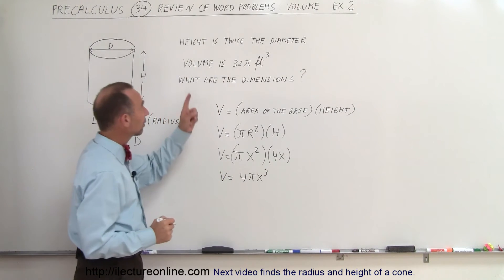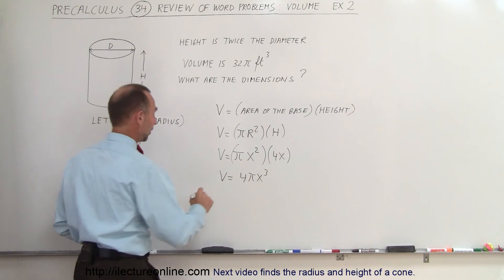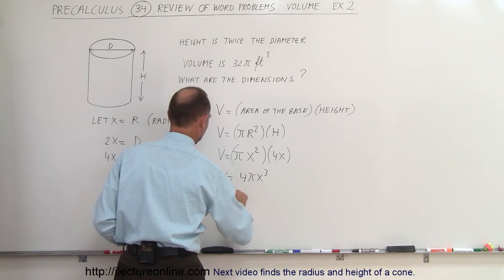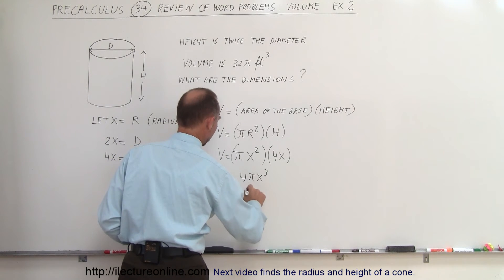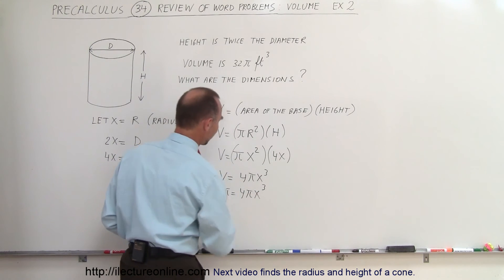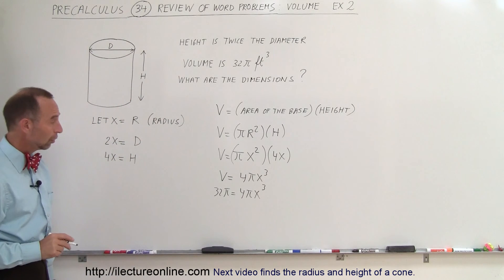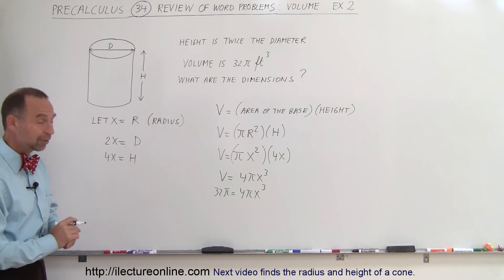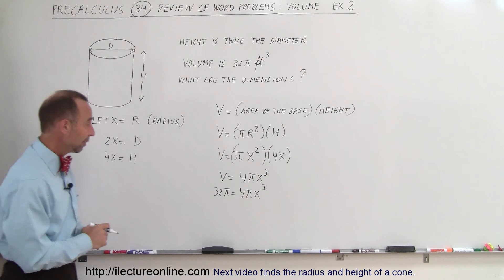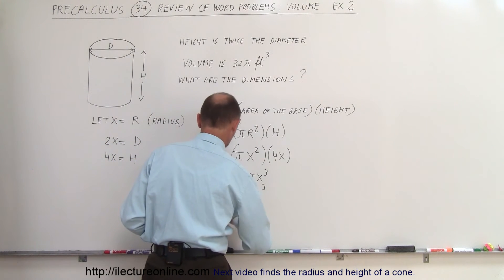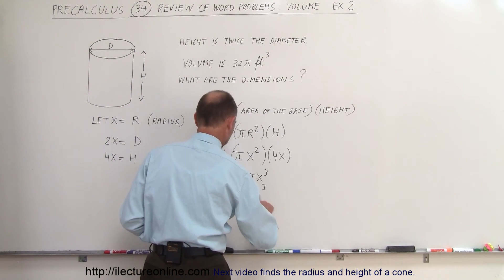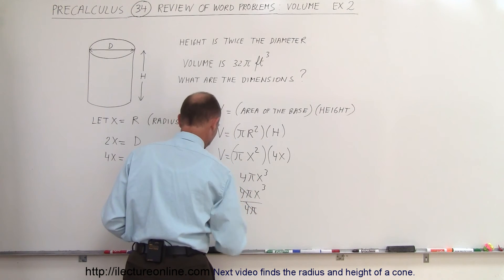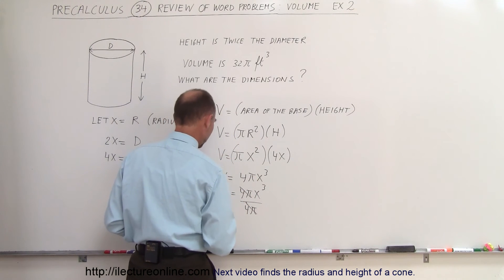We're given that the volume is 32π, so we can say that 32π is equal to 4πx³. Now we have to find what x is equal to. Here you can see that we can divide both sides by π and we can divide both sides by 4. So the π's cancel out and 32 divided by 4 is 8.